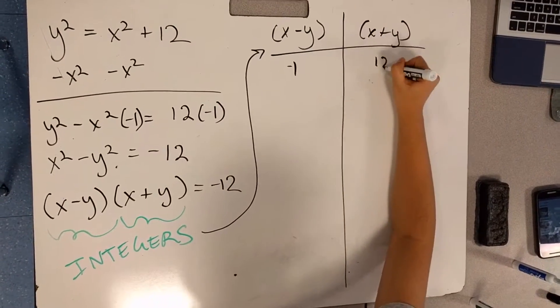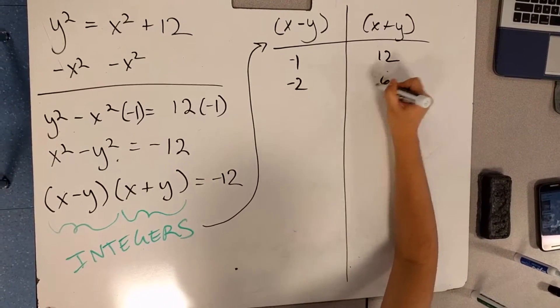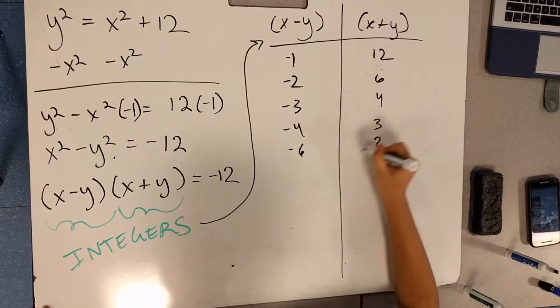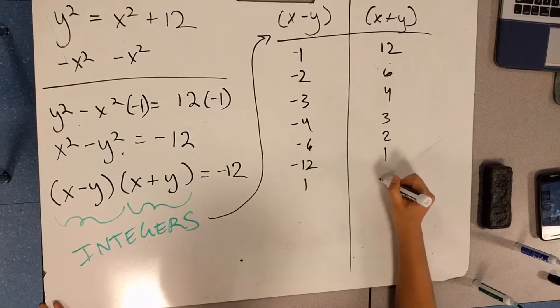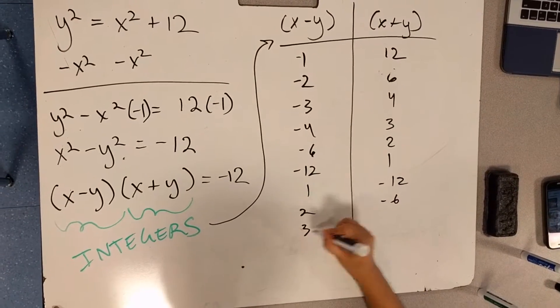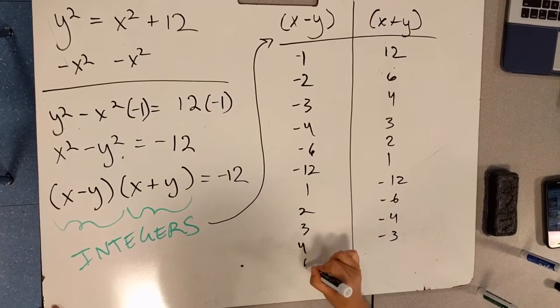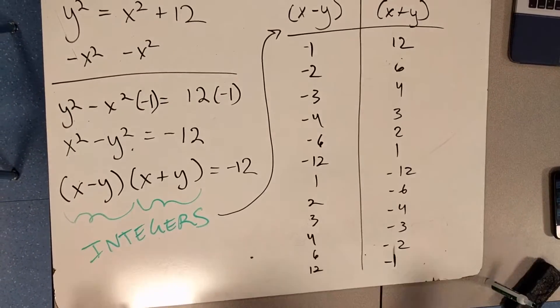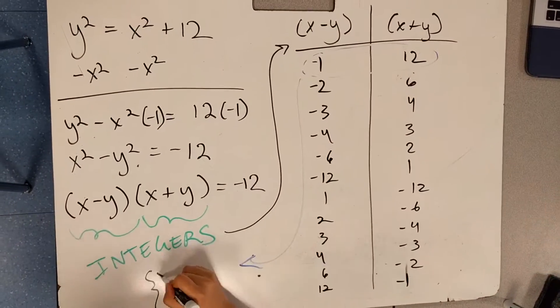The integer pairs are: negative 1, 12; negative 2, 6; negative 3, 4; negative 4, 3; negative 6, 2; negative 12, 1; 1, negative 12; 2, negative 6; 3, negative 4; 4, negative 3; 6, negative 2; and 12, negative 1. Each pair corresponds to a system of equations where y-x is the left number and y+x is the right one.